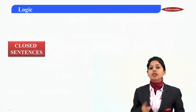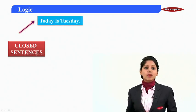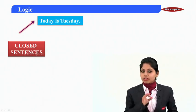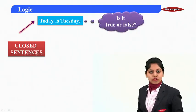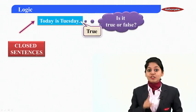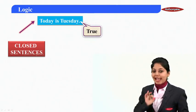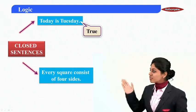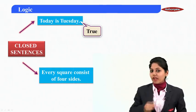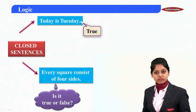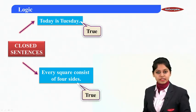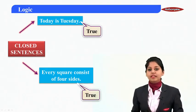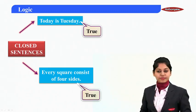Now if I give you more examples of closed sentences: today is Tuesday. If I ask you, is it true or false? Yes, it's Tuesday today, so it is a true sentence. Another example: every square consists of four sides. Is it true or false? Mathematically it's true — it's a true sentence. Both of these are closed sentences because they each have a truth value of either true or false.